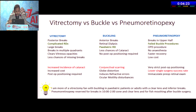I am more of a vitrectomy fan with buckling. I'll advise buckling in pediatric patients or adults with a clear lens and inferior breaks. Pneumoretinopexy is reserved for breaks in the 10 to 2 zone, clear lens, and for fish-mouthing after buckling surgery. And there are problems attached to all three procedures.